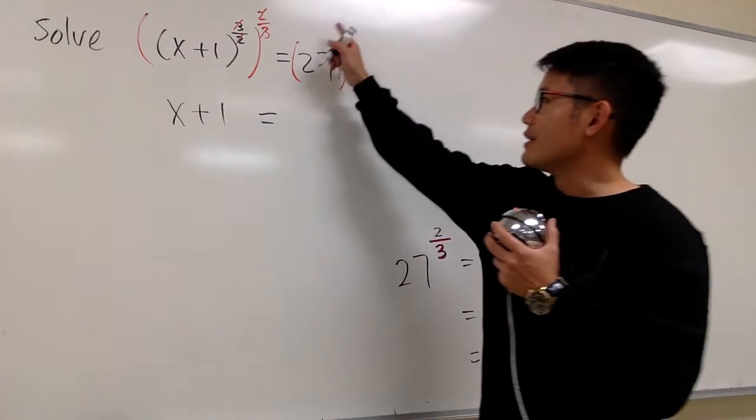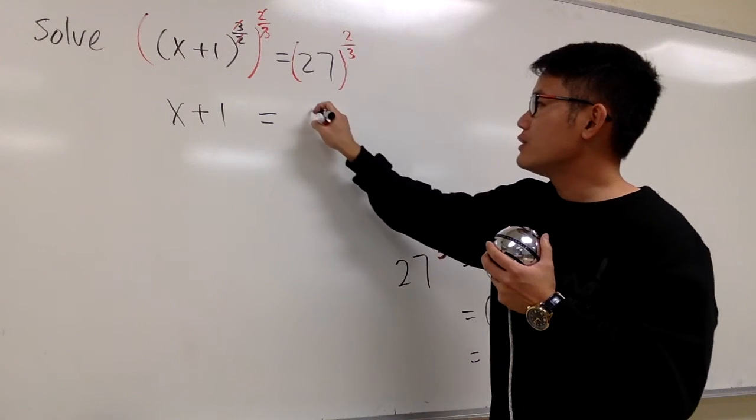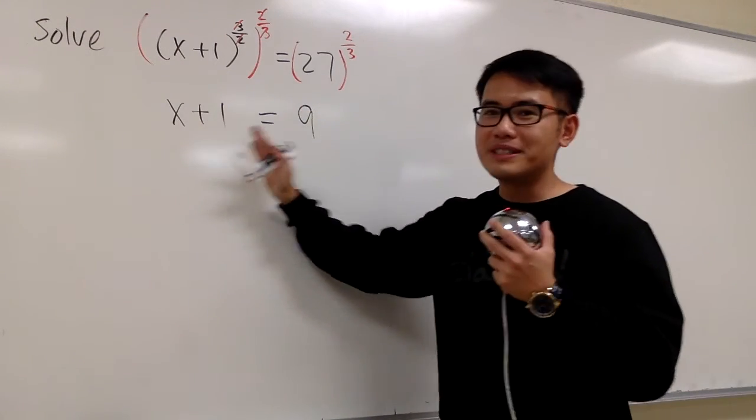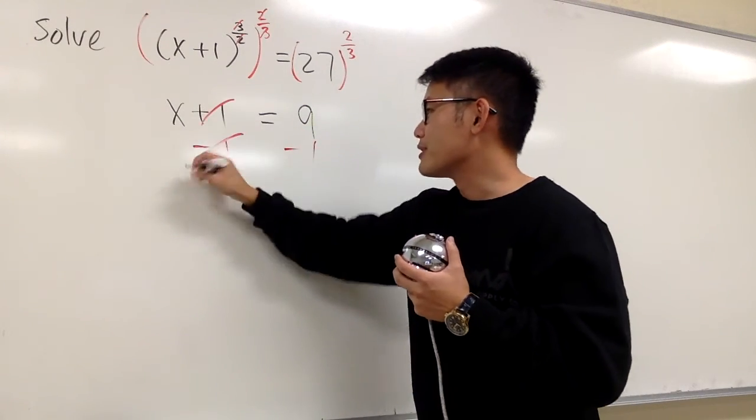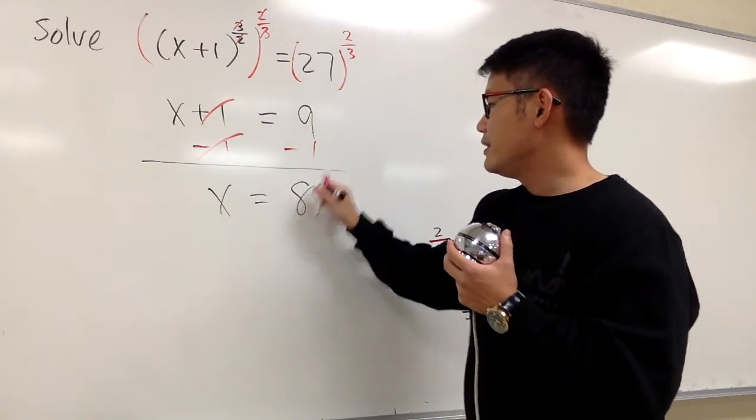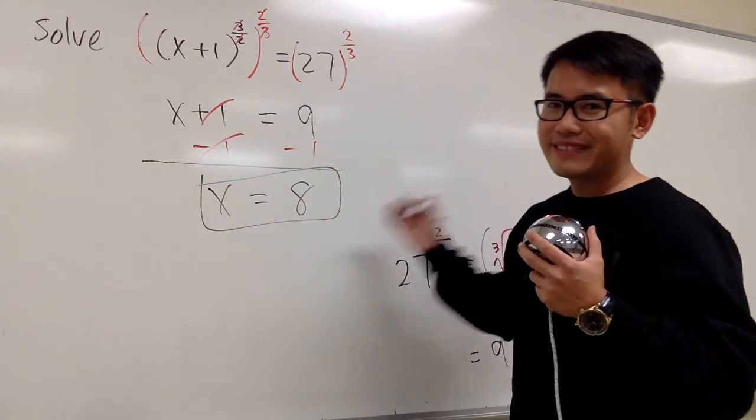So all in all, on the right-hand side, this to that power is just 9. Therefore, x plus 1 is equal to 9. What's x? Well, it's 8. After we subtract 1 on both sides, you have the answer here. That's it.